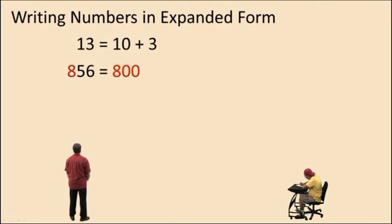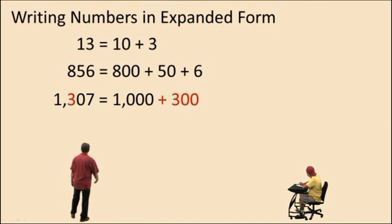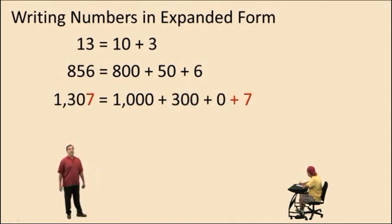Eight hundred fifty-six. We have eight hundreds, five tens, and six ones. With the number one thousand three hundred seven, we have one one thousand. We have three hundreds. We have zero tens. And we have seven ones. Oh, what fun. Let's do another one.